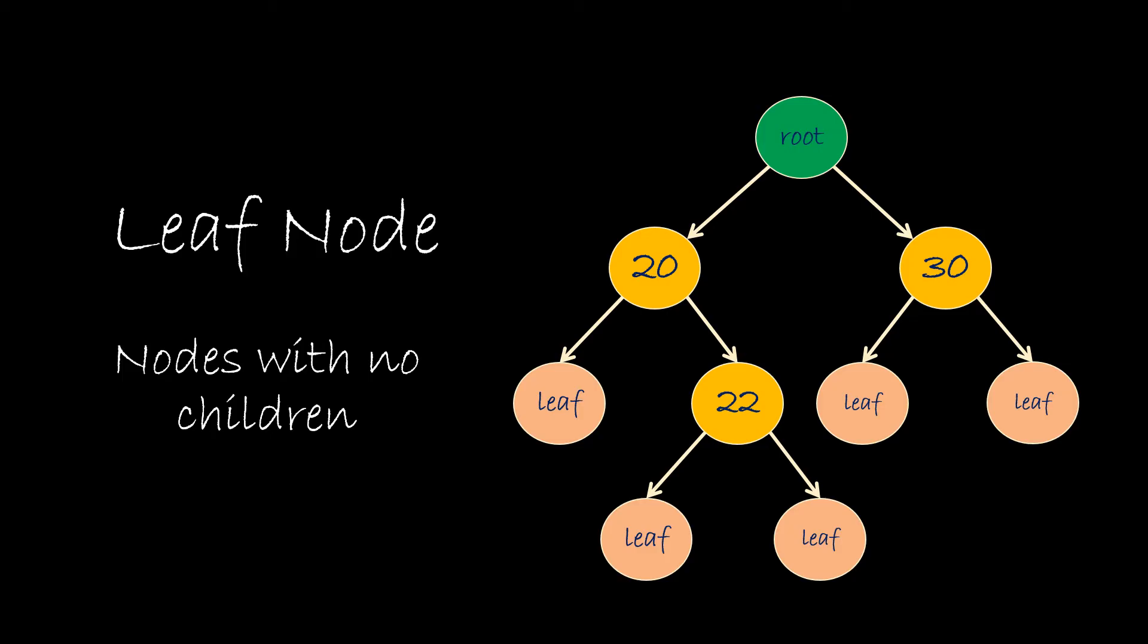Leaf nodes are the nodes that have no children. In an organizational structure, the leaf node can be the team member to whom no other employee reports. Here we can see that the nodes labeled leaf do not have a child and these are thus called leaf nodes.